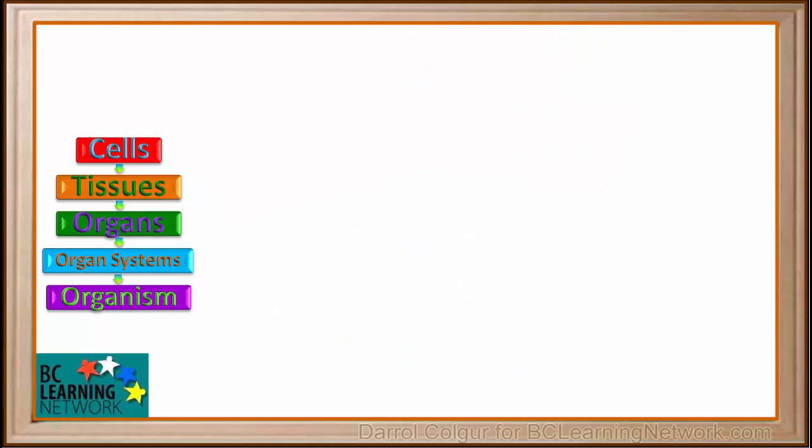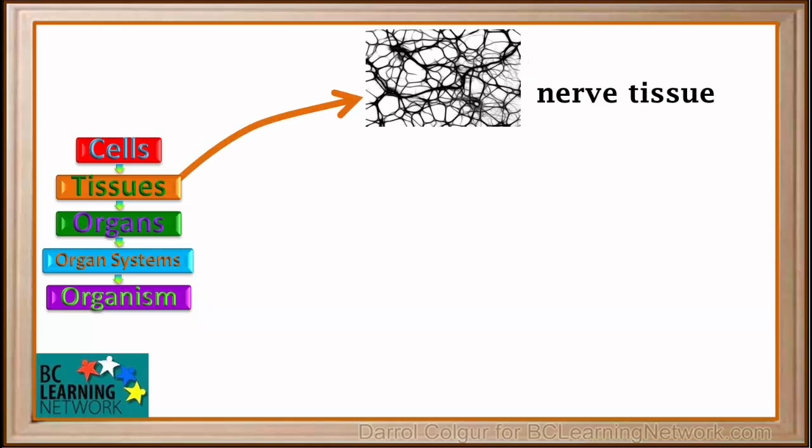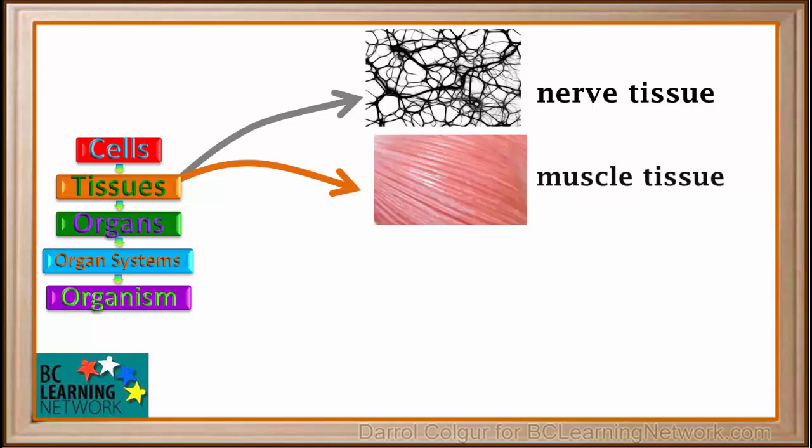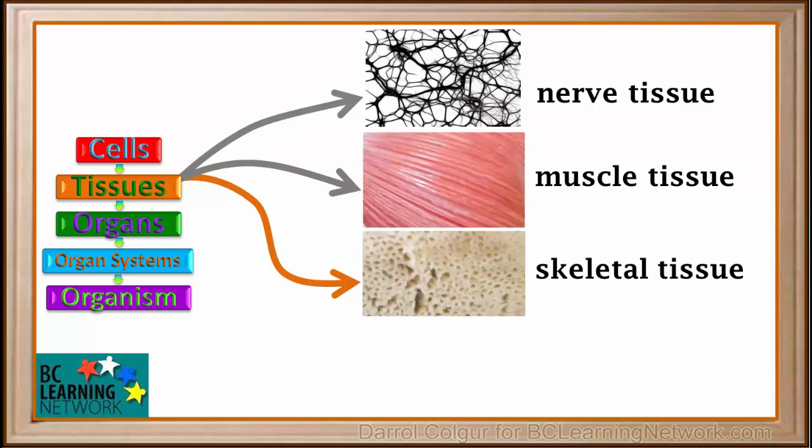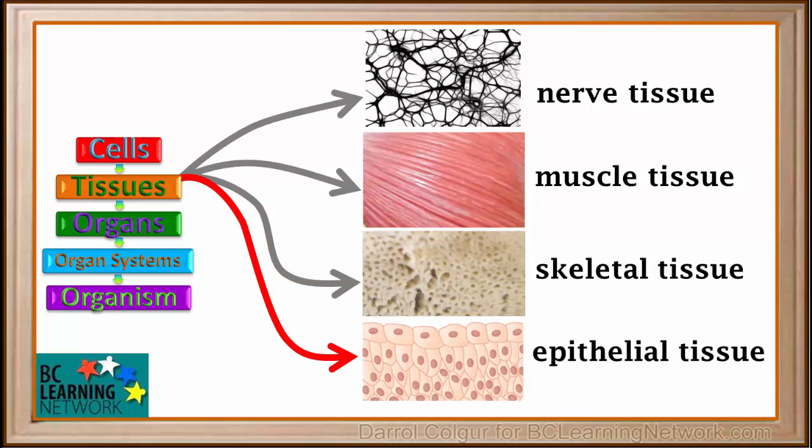Tissues are made up of similar cells, all working together. Here is some nerve tissue. Here is some muscle tissue. Our bones are made up of skeletal tissue. Epithelial tissue covers all the surfaces in our body, inside and out.